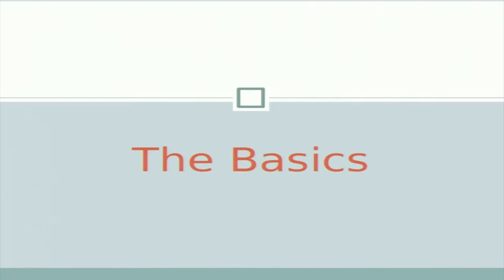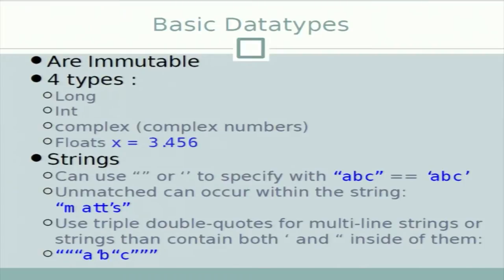So now we don't have to use 'python inton.py', we can directly execute it with './inton.py'. The basic data types in Python include integers, long integers, complex numbers, and floats — for example 3.456 is a simple float. These basic data types are immutable.